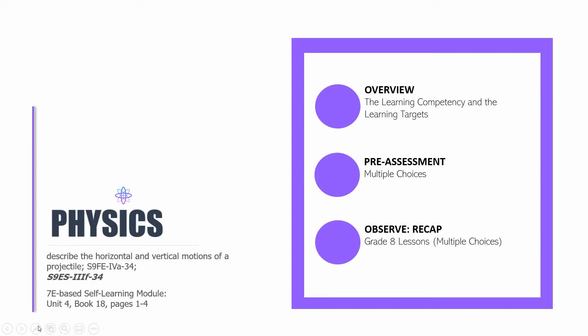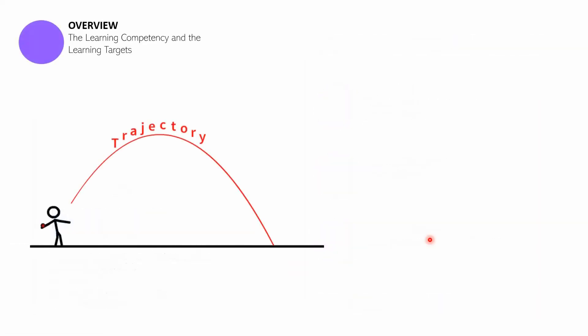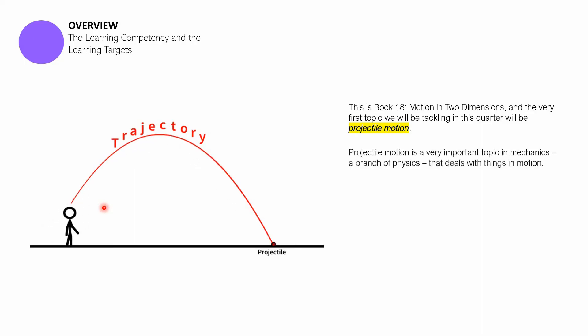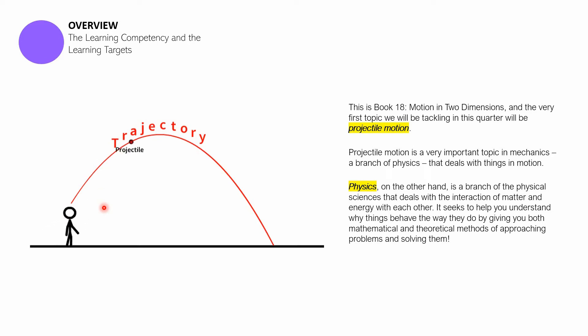Okay, so for the overview, it's simple. It's to give you an idea on what to expect in this video lesson or in this edition of physics. So what you see here right now in this GIF is the word trajectory and the word projectile. This book, 18, is entitled Motion in Two Dimensions. And the very first topic that we will be tackling in this quarter will be about projectile motion. Projectile motion is a very important topic in mechanics, a branch of physics that deals with things in motion. Physics is a branch of the physical sciences that deals with the interaction of matter and energy with each other. It seeks to help you understand why things behave the way they do by giving you both mathematical and theoretical methods of approaching problems and solving them.